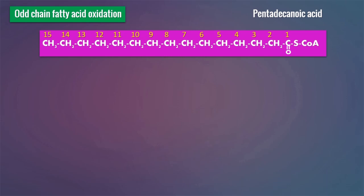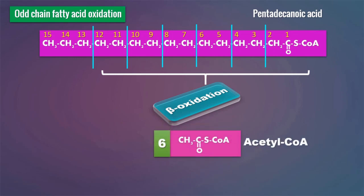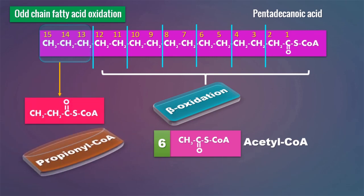The initial oxidation of odd chain fatty acids is through beta oxidation — that means every two carbon atoms are removed as acetyl-CoA. Since this is a 15-carbon fatty acid, we will get six molecules of acetyl-CoA through beta oxidation. Unlike beta oxidation of even-numbered fatty acids, the remaining part of this pentadecanoic acid is three carbons — not two — and this is released as propionyl-CoA, the shortest odd chain fatty acid. You must notice that odd chain fatty acids yield acetyl-CoA as well as propionyl-CoA.